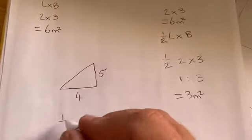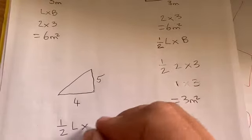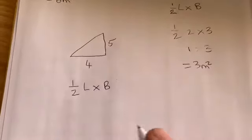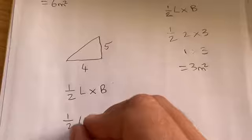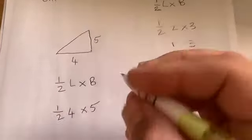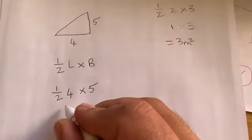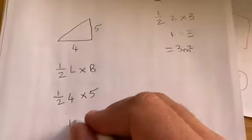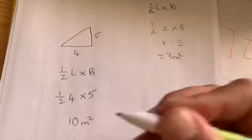Let's do another one. Let's say we've got this one and it's 4 times 5. So again, remember the formula is half length times breadth. So it's half of 4 times by 5. We know half of 4 is 2, and 2 times 5 is 10, so it's 10 meters squared.